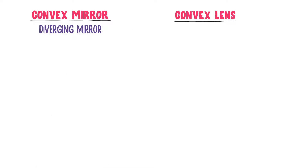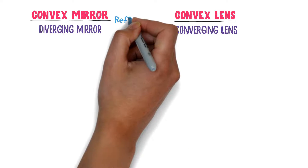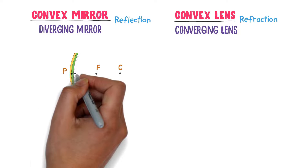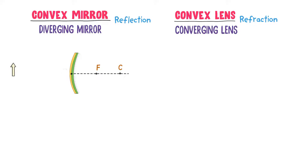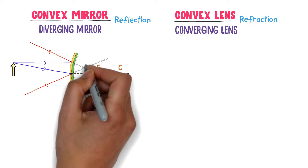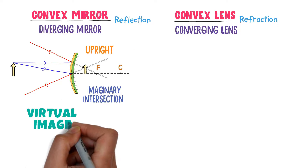Now convex mirror is a diverging mirror and convex lens being opposite is a converging lens. Reflection phenomena occurs in convex mirror and refraction phenomena occurs in convex lens. Consider a convex mirror. This is the center of curvature, focal point, pole, and principal axis of the convex mirror. I place an object here. A light ray parallel to the principal axis hits the mirror and it is reflected from the focal point. Secondly, another ray of light hits the mirror at its pole at an angle of 40 degrees and is reflected at the same angle of 40 degrees. The reflected rays do not intersect anywhere, so extending them at the backside gives an imaginary intersection of light rays. Hence, an upright image is formed and this image is a virtual image.